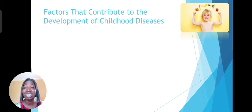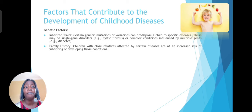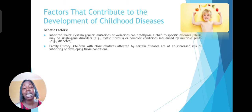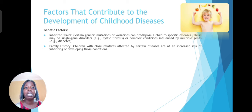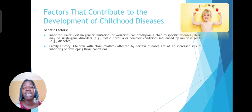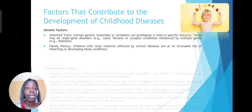Childhood experiences with various infections help to train and strengthen the immune system. So what are the factors that actually contribute to the development of childhood diseases? They are broken down into about four parts. The first part is genetic factors, which looks at inherited traits where certain genetic mutations or variations can predispose a child to specific diseases. For example, cystic fibrosis, or complex conditions influenced by multiple genes like diabetes. Then family history — children of close relatives affected by certain diseases are at increased risk of inheriting these conditions.